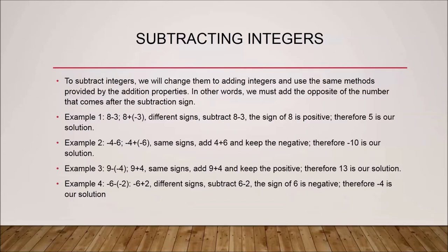Final example: minus six minus minus two. We change the opposite of minus two to positive two, giving us minus six plus two — a case of different signs. We do six minus two, which equals four. The larger number, six, has a negative sign, so the final answer is minus four.